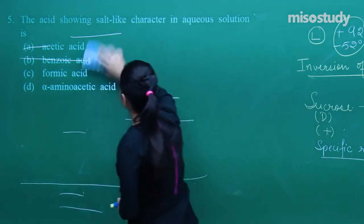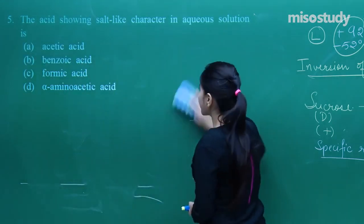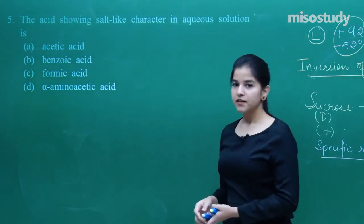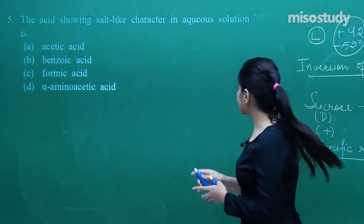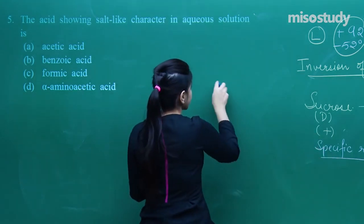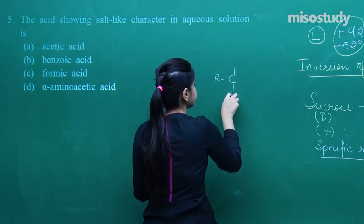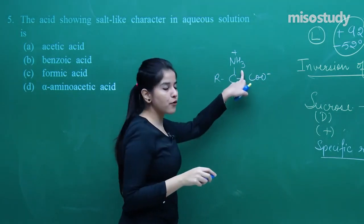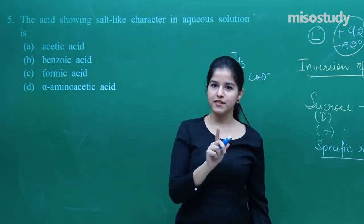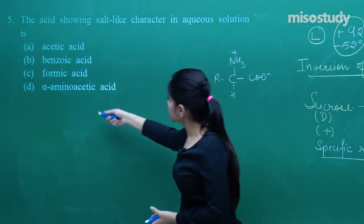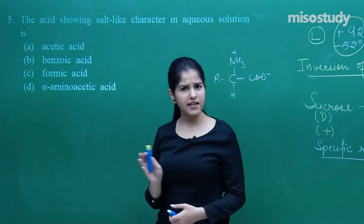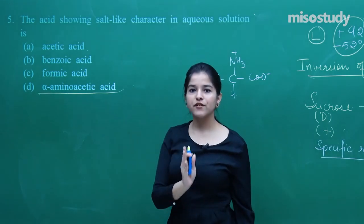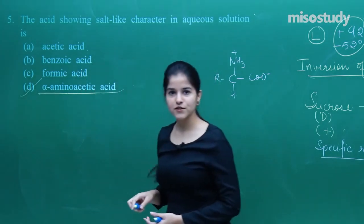First question from the passage: which acid shows salt-like character? Salt-like character is definitely present in amino acids due to the formation of a zwitterion — having a positive as well as a negative ion within the same molecule. The options include acetic acid, benzoic acid, and formic acid, but only alpha amino acids have salt-like character. So the alpha amino acid option is the answer.